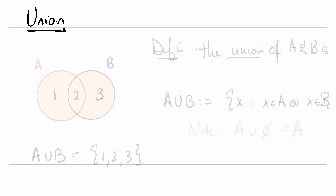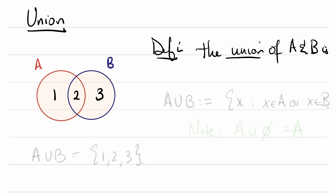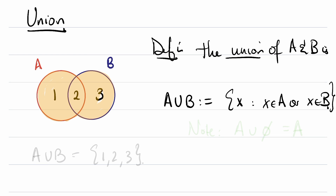First, let's introduce the union. So you've got two sets A and B with elements 1, 2, 3. Definition: the union of A and B, denoted A ∪ B, is defined to be {x such that x is in A or x is in B}. So in this case, A union B is going to be the set {1, 2, 3}. One other thing to note is that any set unioned with the empty set is the set that you started with.